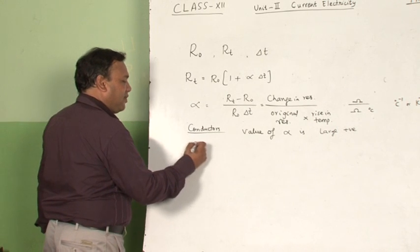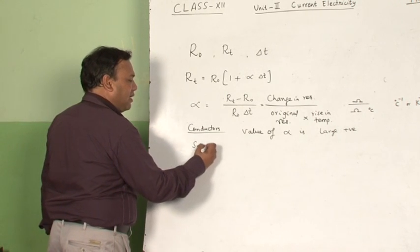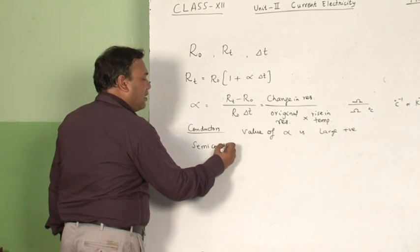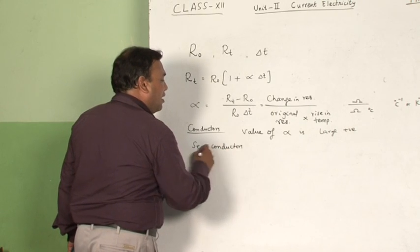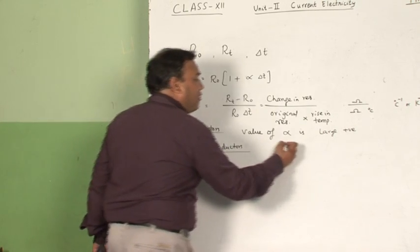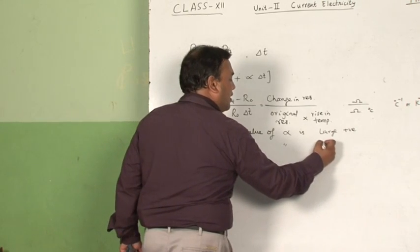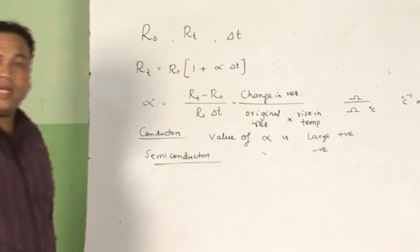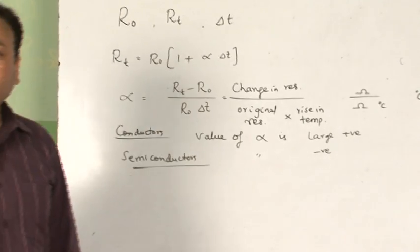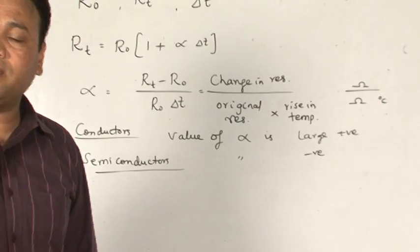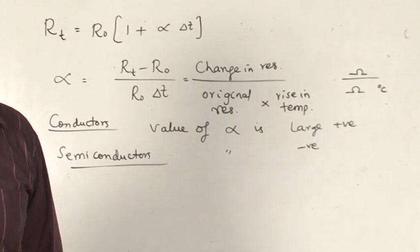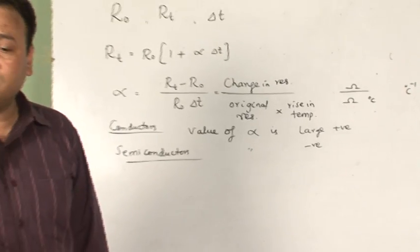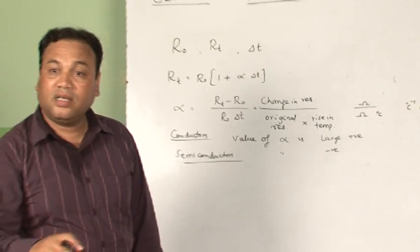In the case of semiconductors, the value of alpha is negative. This means that if you go on increasing the temperature of semiconducting materials, the resistance goes on decreasing.